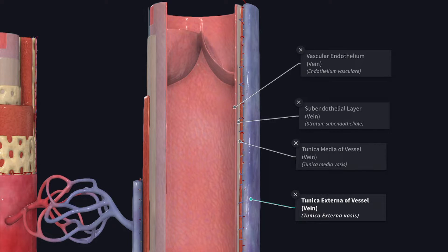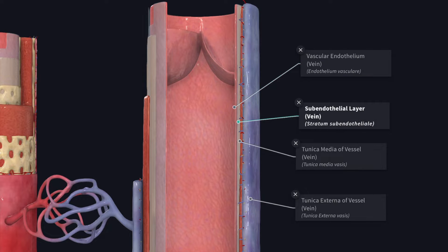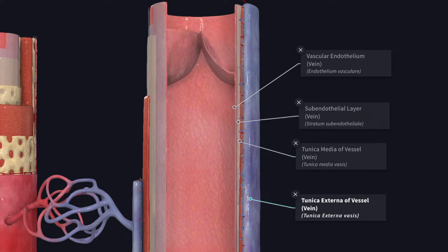In this video we will study about the histology of the veins. The basic structure of the veins is similar to that of the artery. It has tunica intima which includes the vascular endothelium and the sub-endothelial connective tissue. Then you have the tunica media and the tunica adventitia or the externa.